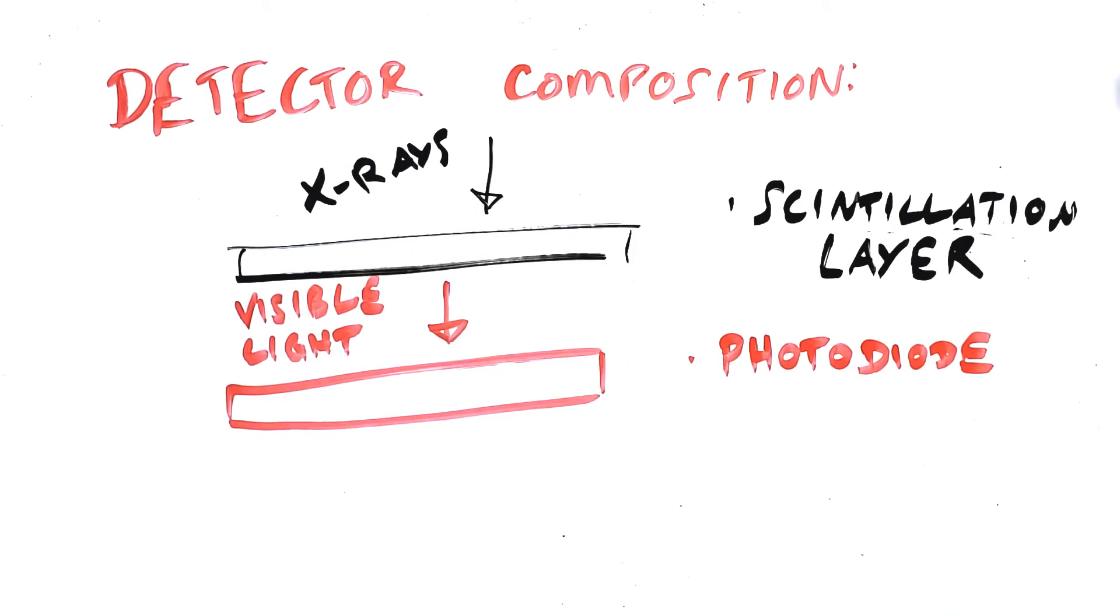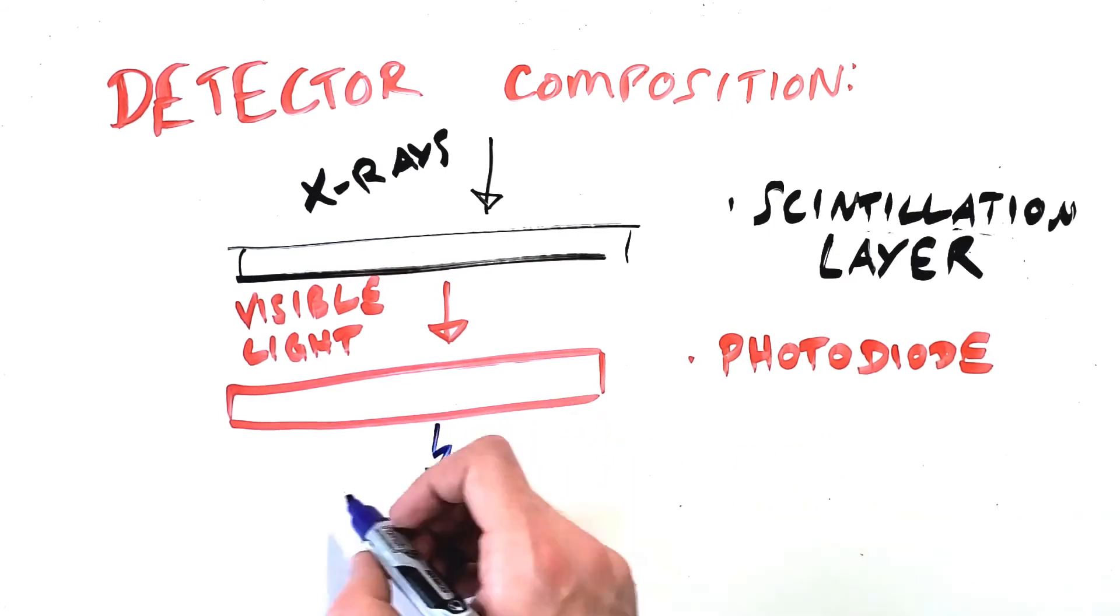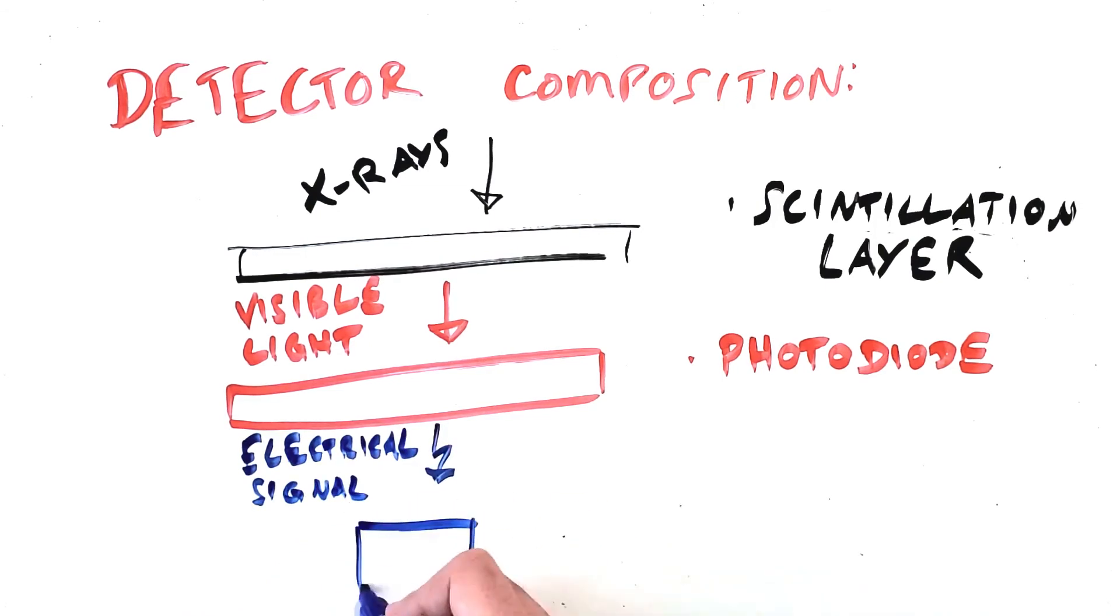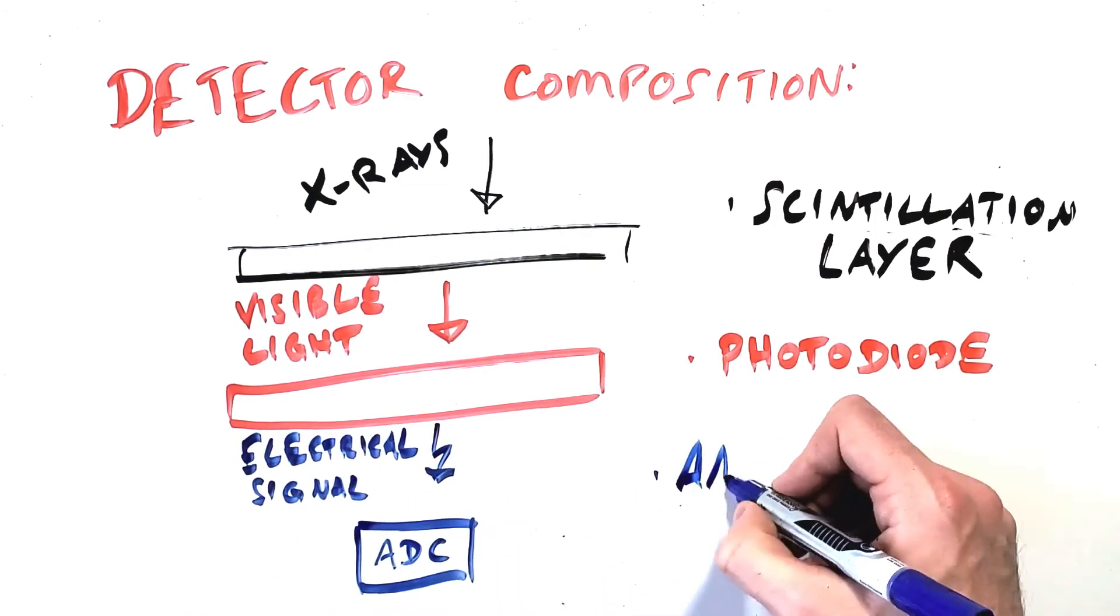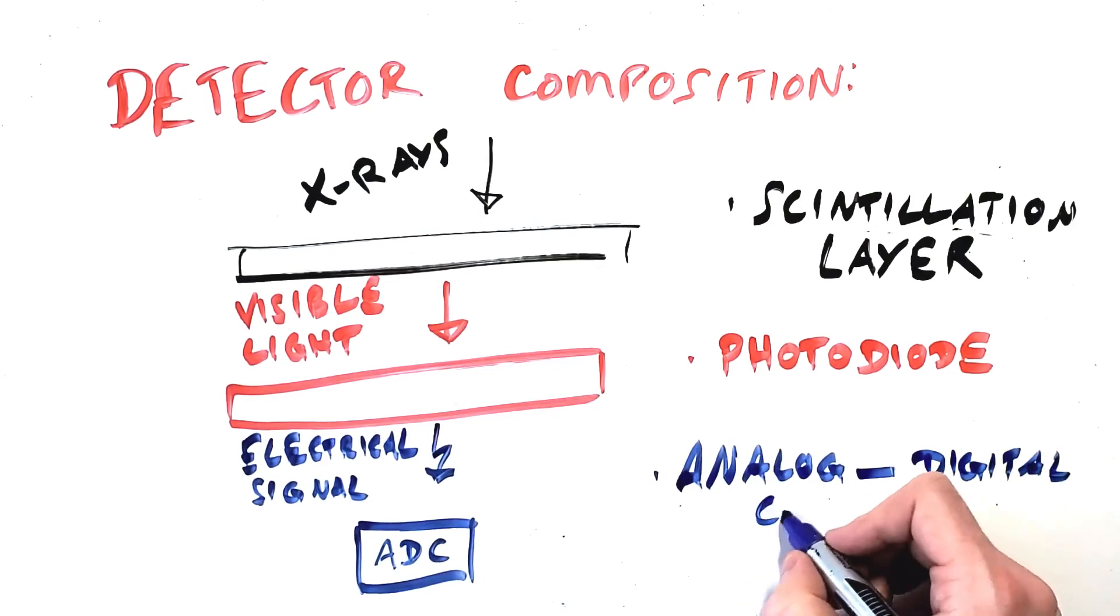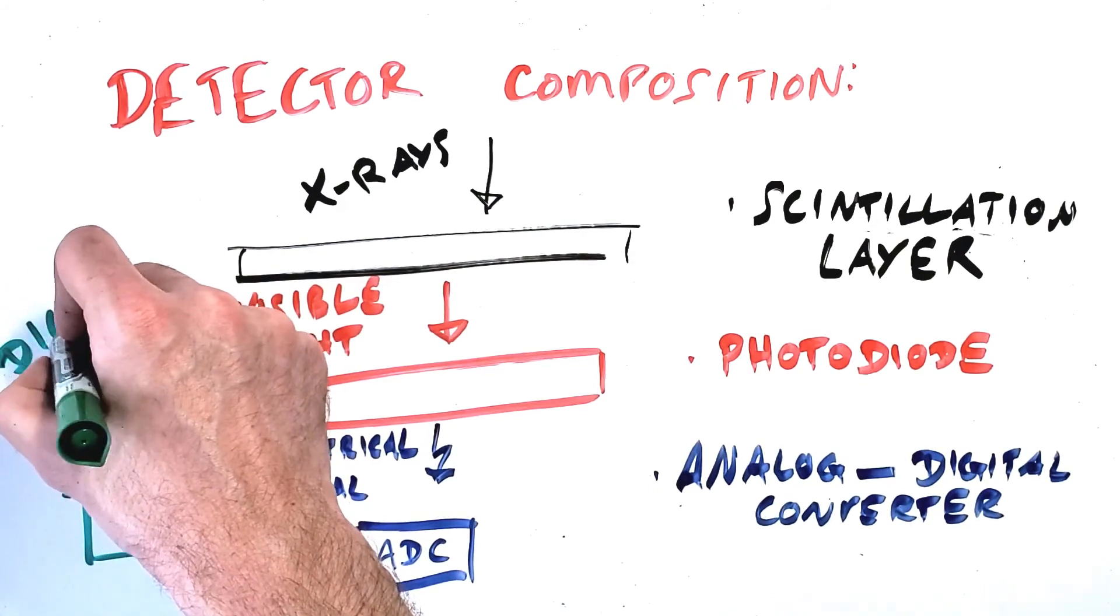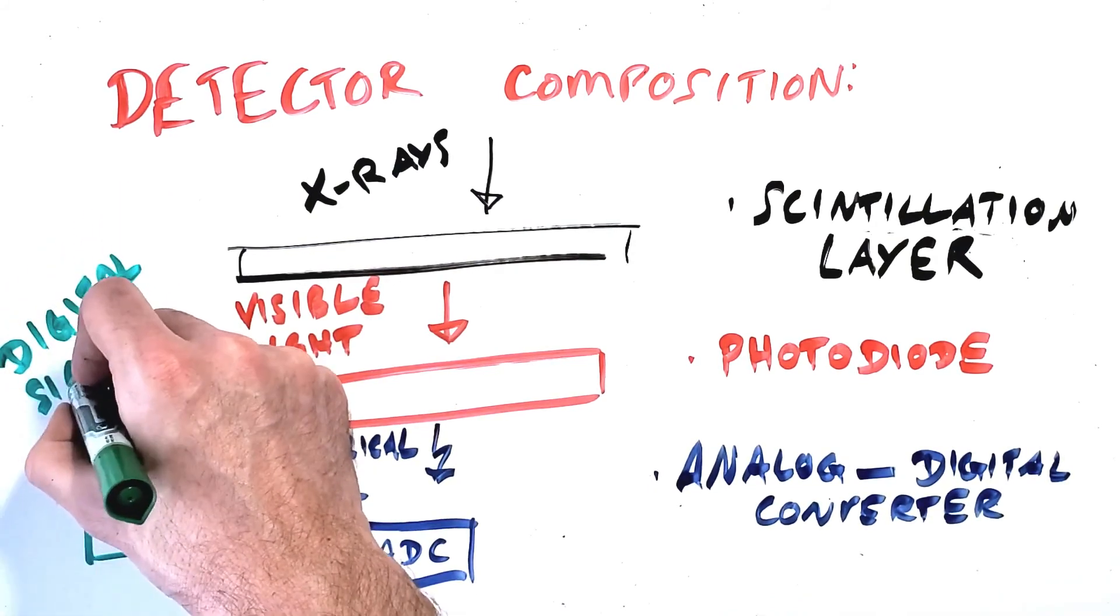The detector is an indirect type digital detector, meaning that x-rays incident on the detector are absorbed by a scintillation layer and converted into visible light. This visible light hits a photodiode which converts that light into an analog electrical signal. That analog signal is then converted into a digital signal by an analog to digital converter or ADC and at this point we have raw image data which is ready to be communicated to our workstation and processed into an image.